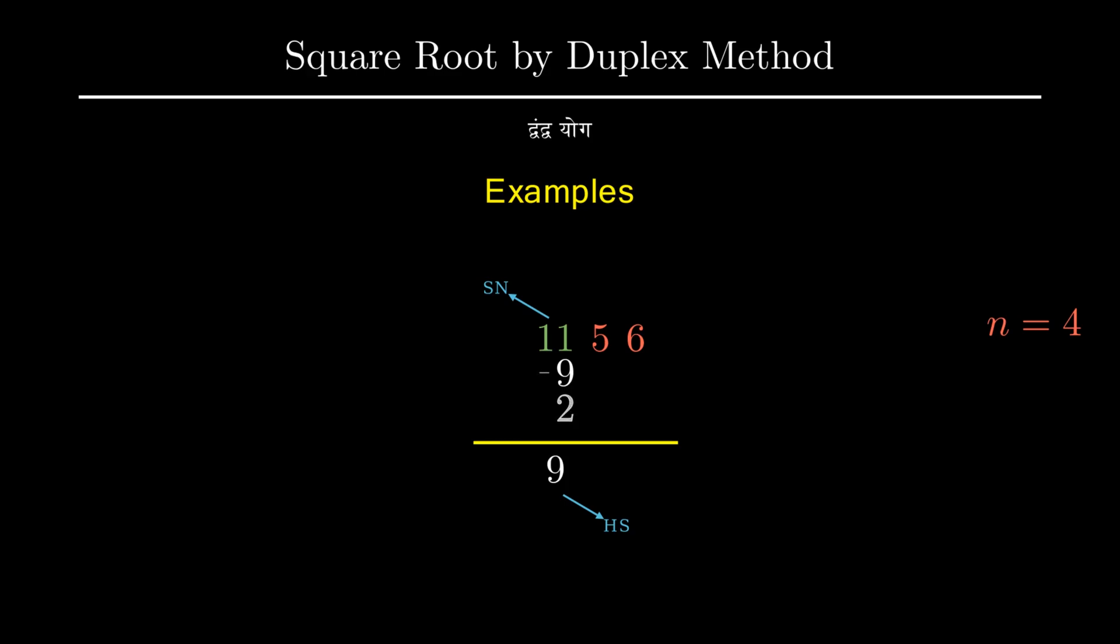This highest square is then subtracted from the starting number and the remainder is kept in the base of the right digit. Next we will take square root of 9 which is 3.